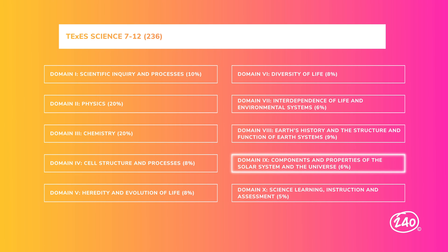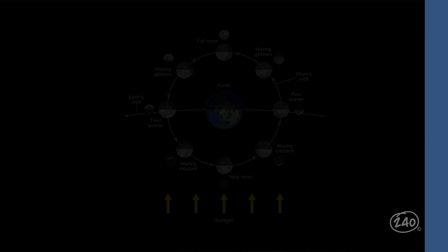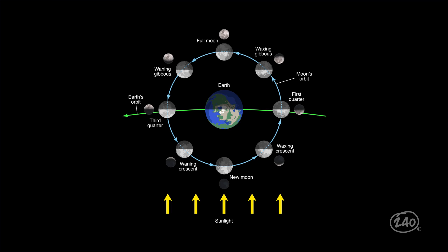We've reached domain 9, Components and Properties of the Solar System and the Universe. There are four competencies here, all covering topics like astronomy and our solar system. Let's start with the Moon. The Moon's orbit causes the lunar phases to appear to us. There are four main phases, each about a week apart: New Moon, First Quarter, Full Moon, and Third Quarter.